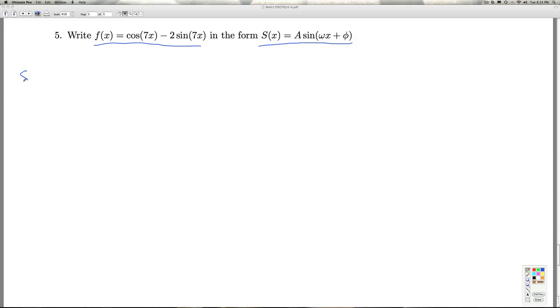The way we start is we use the sum identity for sine. And how does that go? So the sine of alpha plus beta is the sine of alpha times the cosine of beta plus the cosine of alpha times the sine of beta.